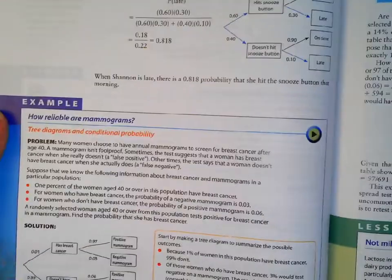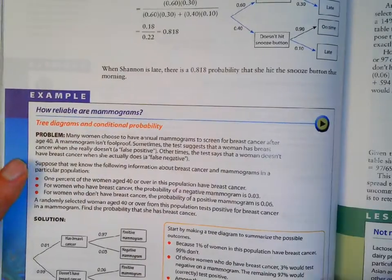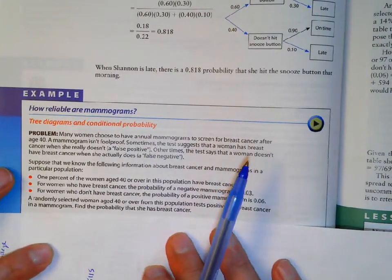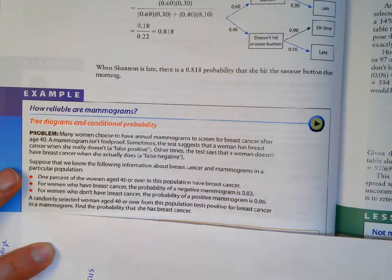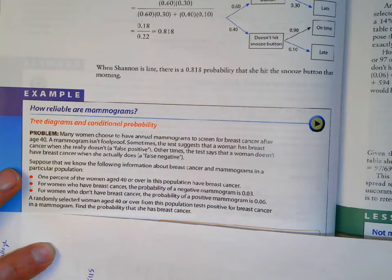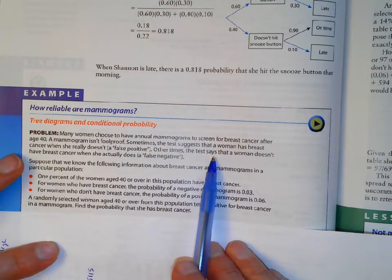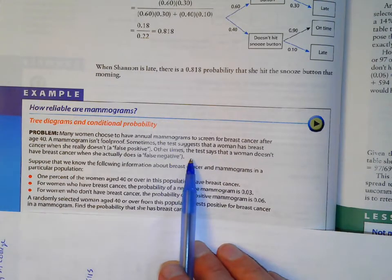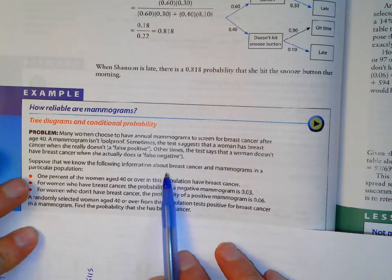Many women choose to have an annual mammogram to screen for breast cancer after age 40. A mammogram isn't foolproof — sometimes a test suggests a woman has breast cancer when she doesn't (false positive), and other times it says she doesn't have it when she actually does (false negative). This can happen with other tests like the coronavirus test too.